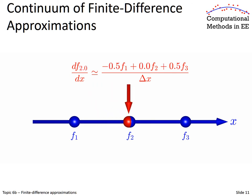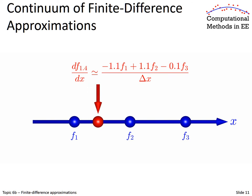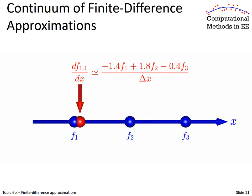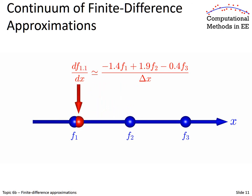Here is an animation where we have three points and we are deriving our finite difference approximation to calculate a first-order derivative. What we are changing is the point where we are evaluating that first-order derivative, and we can watch the finite difference coefficients change as a function of where we evaluate the finite difference. This is a really good animation to stare at for a while — I will try to make it available on the website.